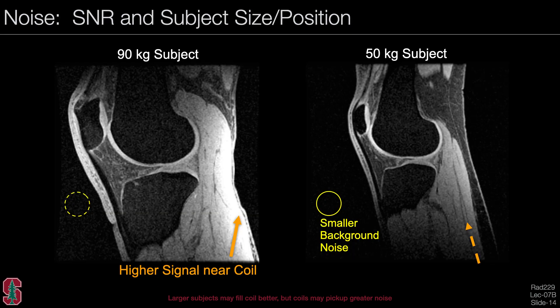Now let's look at the noise with respect to subject size and coil position. With a large subject versus a small subject: in the large subject there is greater noise, simply because there is more body noise in the coil. On the right, with a smaller subject, there is lower background noise. Also notice that on the left the subject is closer to the coil, filling it more, so you see a very bright signal near the coil at the back of the knee.